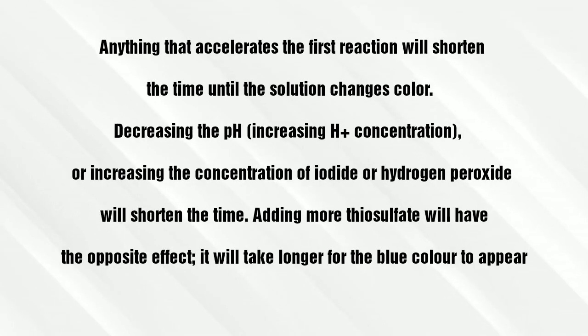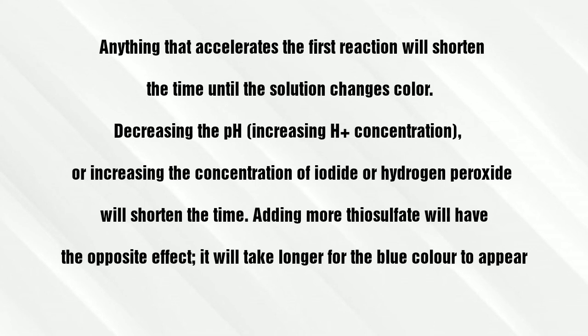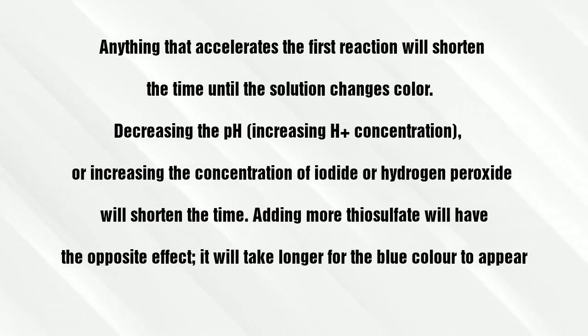The rate of this reaction can be altered by two methods. One is by increasing the acid concentration, iodide, and hydrogen peroxide, or by decreasing the thiosulphate.